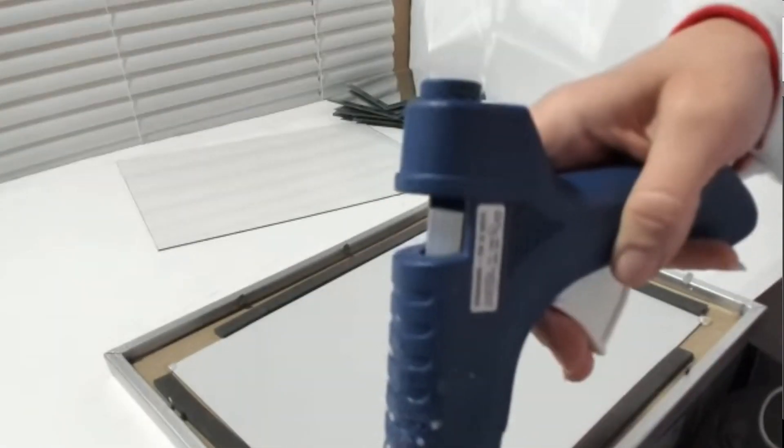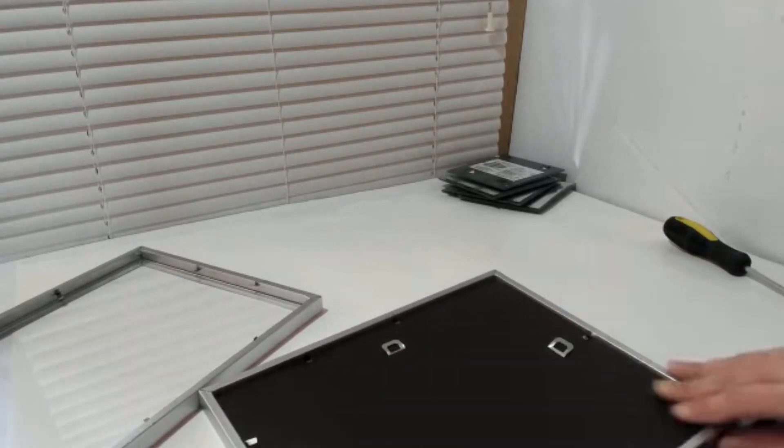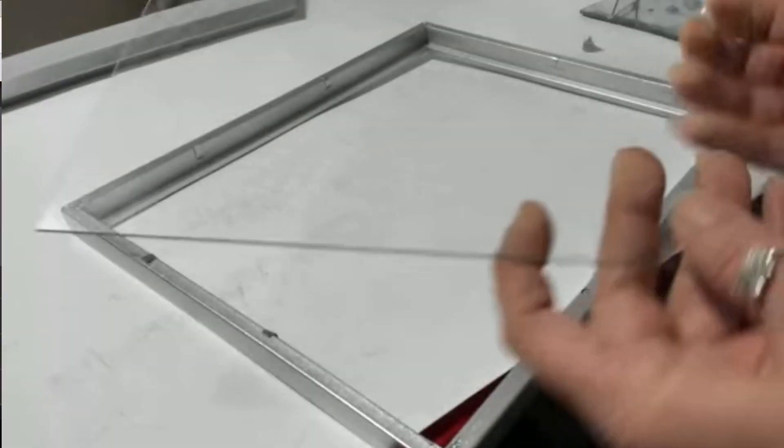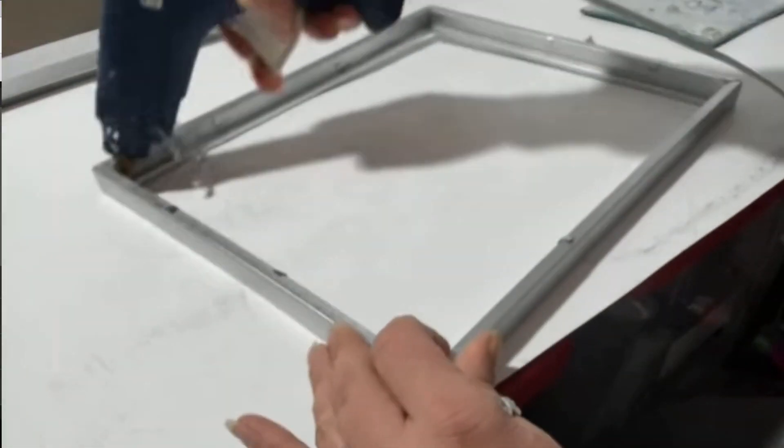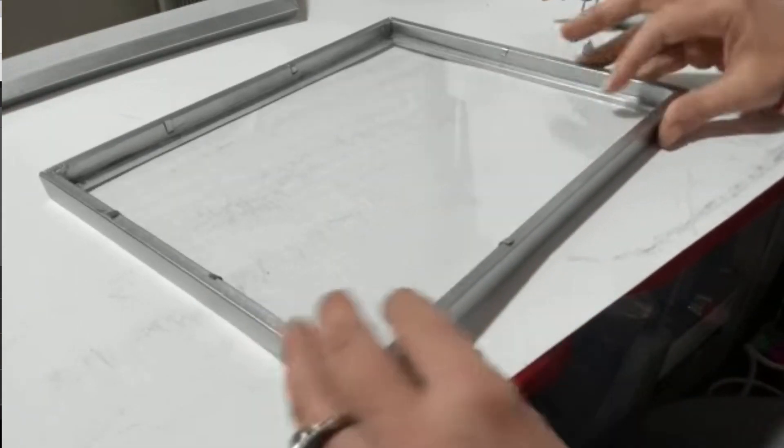So with the other two picture frames I'm just going to take some hot glue and go around the inside rim of it and put the glass in there just to reassure that it doesn't shake.